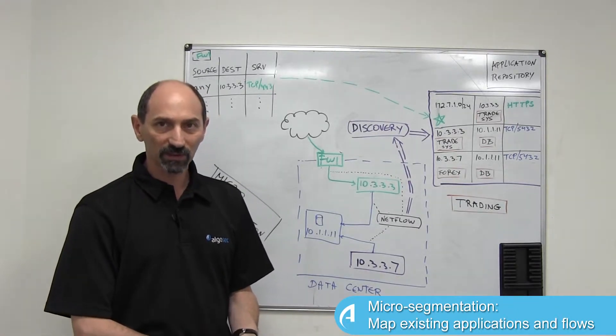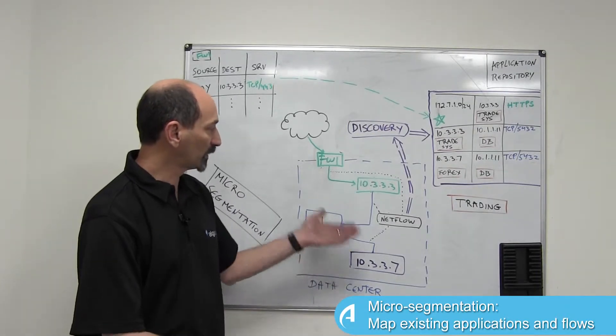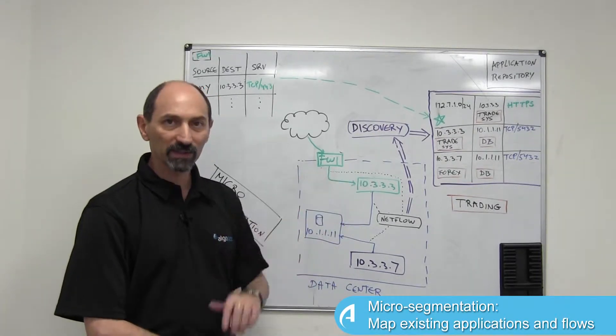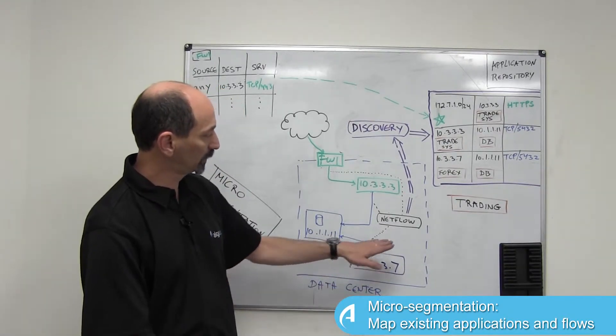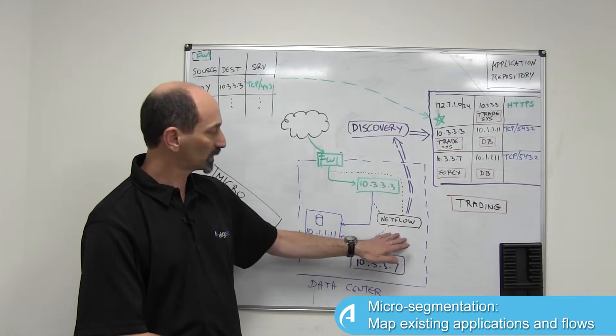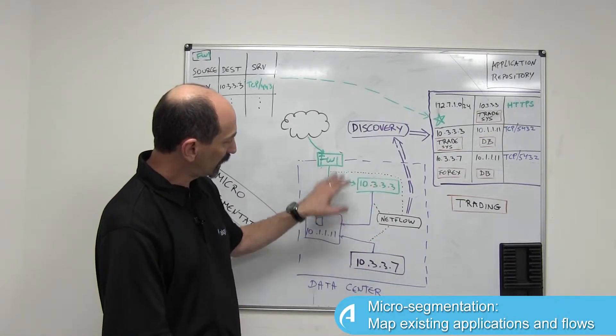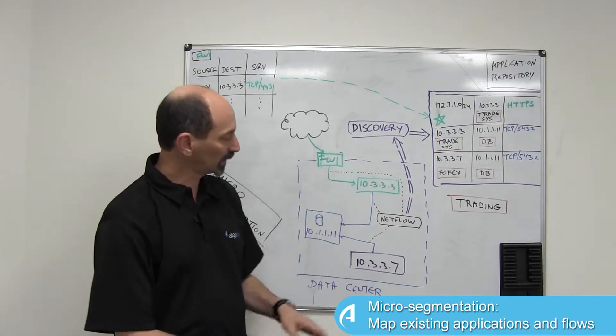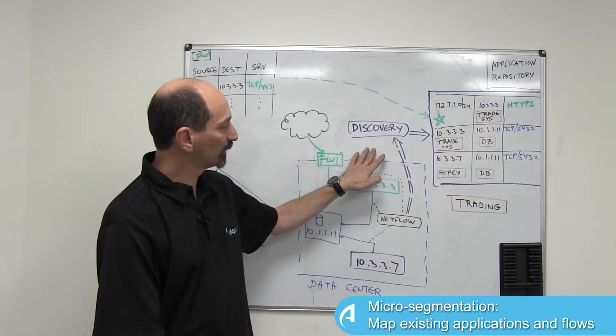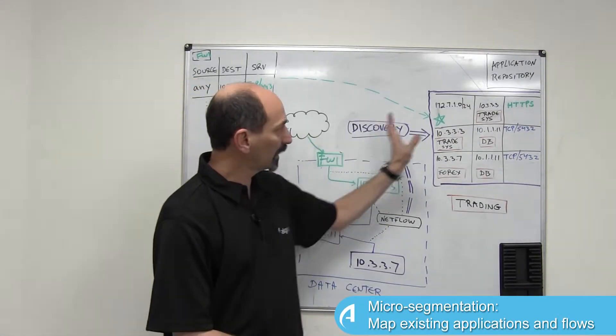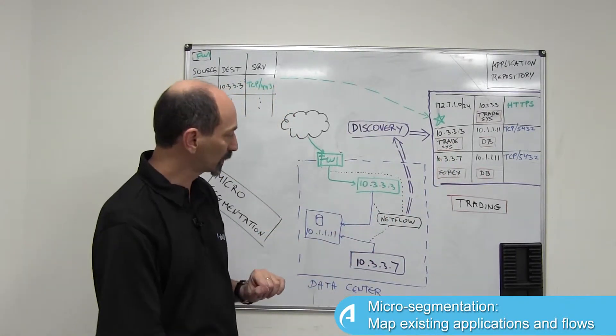So the first thing that you need to do is to identify all the network flows happening inside the data center. How would you go about doing that? Well a good way to do so would be to use a NetFlow source, having it sniff all the traffic internally and provide NetFlow output to a discovery engine which would then identify the network flows inside the data center.